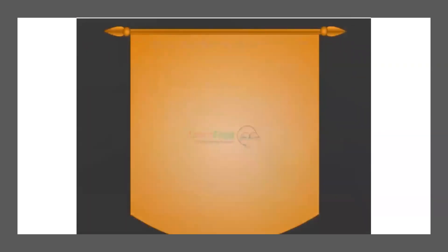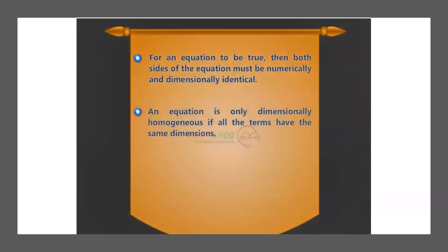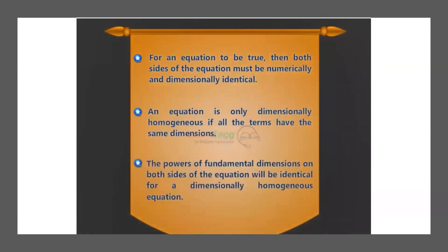For an equation to be true, both sides of the equation must be numerically and dimensionally identical. An equation is only dimensionally homogeneous if all the terms have the same dimension. The powers of fundamental dimensions on both sides of the equation will be identical for a dimensionally homogeneous equation.